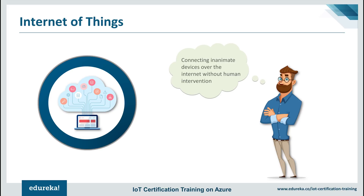But computers and therefore the internet are almost wholly dependent on human beings for information. Nearly all of the data available on the internet today was first captured and created by human beings — by typing, pressing the record button, taking a digital picture, or scanning a barcode. The problem is people have limited time, attention, and accuracy, meaning they're not very good at capturing data about things in the real world. If computers could gather data without any help from us, we could track and count everything and greatly reduce waste, loss, and cost — knowing when things needed replacing or repairing. This gave birth to the Internet of Things.